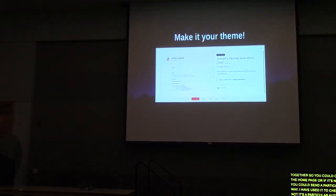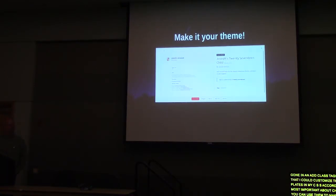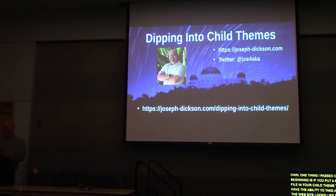What's most important about child themes is that you can use them to make the theme your own. One thing I passed over earlier: if you put a screenshot.png file in your child theme, that gives you the ability to display what the website looks like in the themes dashboard. If you're providing a child theme in a dashboard of 20 installed themes, you can take a quick glance at every theme you have installed. If that file is missing you'll end up with a placeholder grid, but it will still work. We have about 20 minutes left — let's open it up to questions.